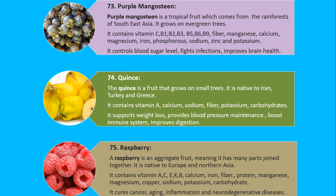Number 74. Quince. The quince is a fruit that grows on small trees. It is native to Iran, Turkey, and Greece. It contains vitamin A, calcium, sodium, fiber, potassium and carbohydrates. It supports weight loss, provides blood pressure maintenance, boosts the immune system, and improves digestion.